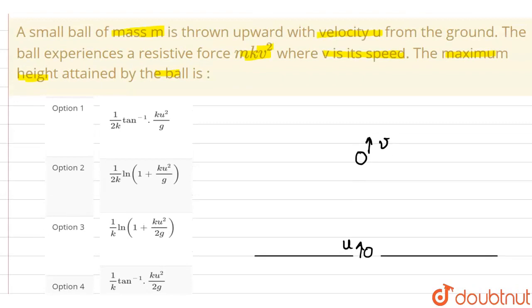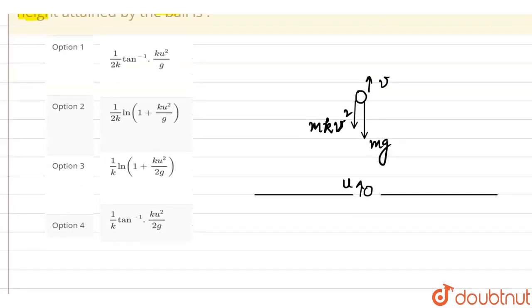If we see the net force acting on this ball is first, the weight of this ball, and second, the resistive force acting downwards which is mkv squared. It depends on the velocity at that particular instant.